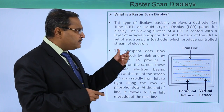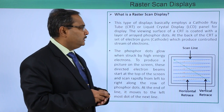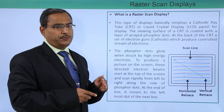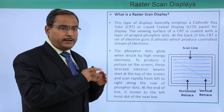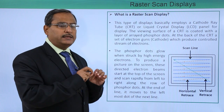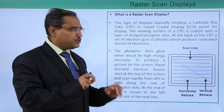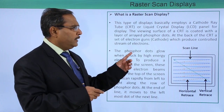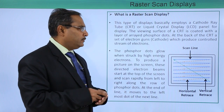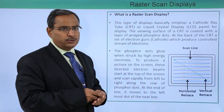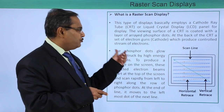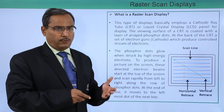The viewing surface of a CRT is coated with a layer of phosphor dots, arranged in a certain fashion. At the back of the CRT, a set of electron guns, also known as the cathode, produce a controlled stream of electron flow.